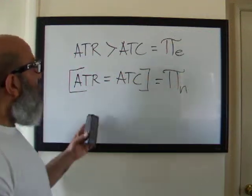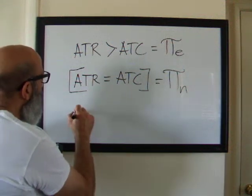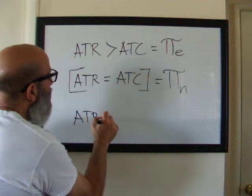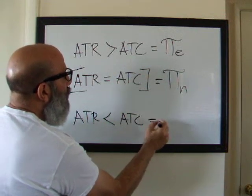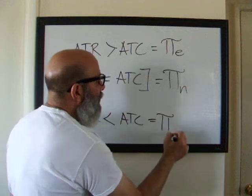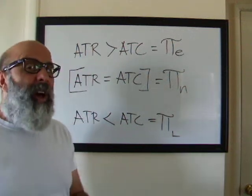The last one that we're going to look at are losses. Anytime the average total revenue is less than the average total cost, we're going to say that that profit is a loss. That's a negative profit.